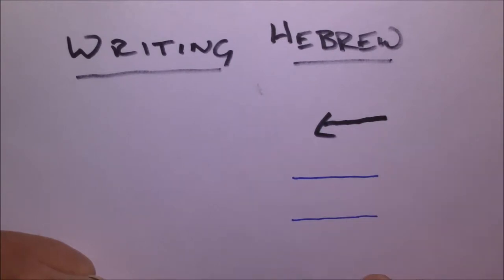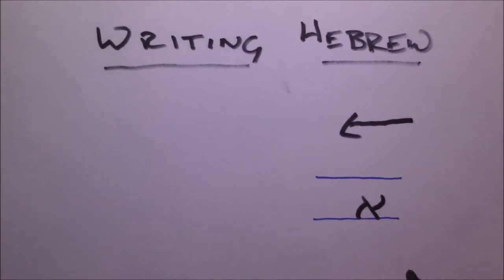So here I'll write the letter Aleph. You notice it takes up about half the space of the line. This is so that we can add any vowels or other markings that we need.